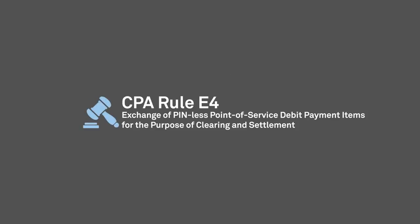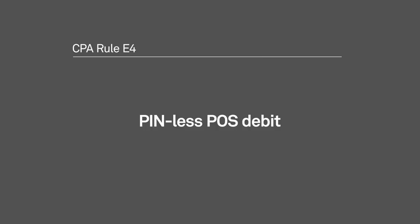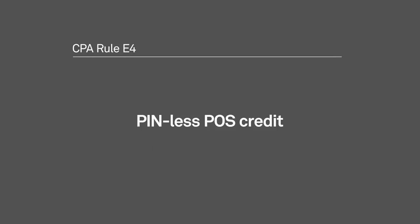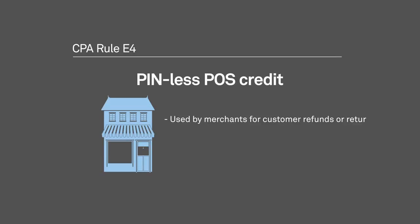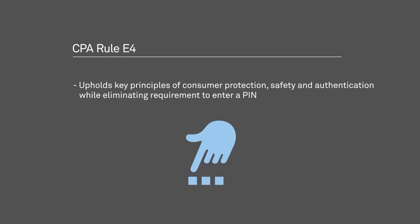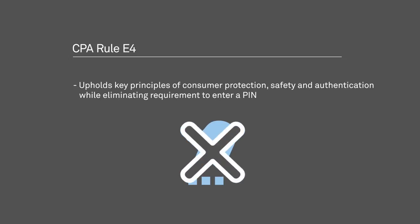Rule E4 governs PIN-less POS payments, which can also be debits or credits. PIN-less POS debits originate in a face-to-face environment when a payor uses a CPA-member-issued payment device, such as a bank card or key fob, to pay for goods or services. PIN-less POS credits are used by merchants for customer refunds or merchandise returns. Rule E4 also addresses procedures that apply if an inquiry or complaint is raised regarding whether a transaction was duly authorized. The key element is that it upholds consumer protection, safety, and authentication, while eliminating the requirement to enter a PIN, further reducing inconveniences such as waiting in ABM and store lines.